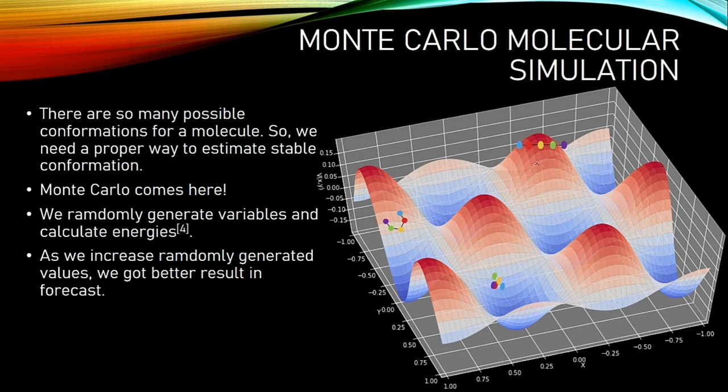So, we need a better way for estimation. Monte Carlo method comes here. We generate random variables. For example, we are generating random x and y values. And then we are calculating their potential energies and their gradients and so on. And then we are deciding whether it is enough or not. And we calculate all possible conformations. So, we estimate possible conformations. As we increase randomly generated values, we got better result in forecast.